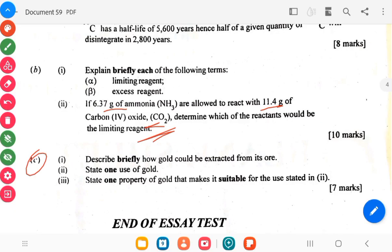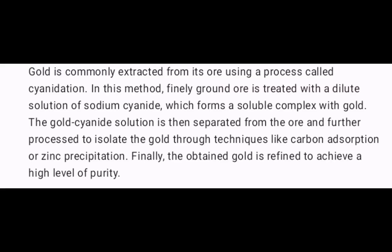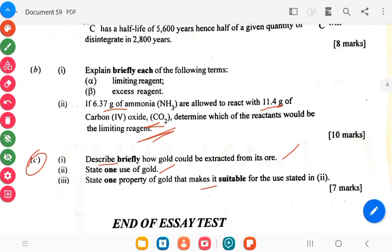And then the C, the last part. Describe briefly how gold could be extracted from its ore. State one use of gold and state one property of gold that makes it suitable for the use stated.